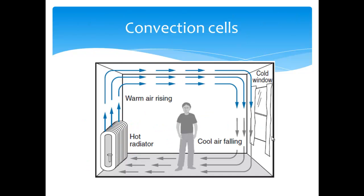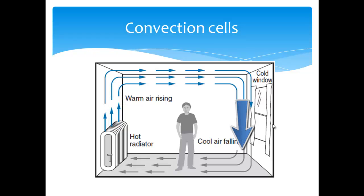Some other ways of looking at local winds are convection cells that occur in a heated room. You would feel this as a draft. Air heated on one side of the room expands and rises. Cooling air on the opposite side contracts and sinks. The energy exchange maintains a flow of air and heat energy called a convection cell.